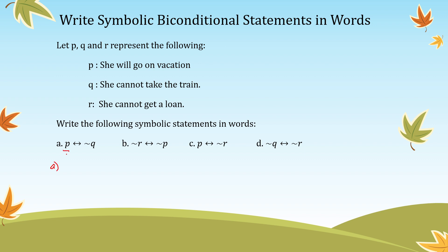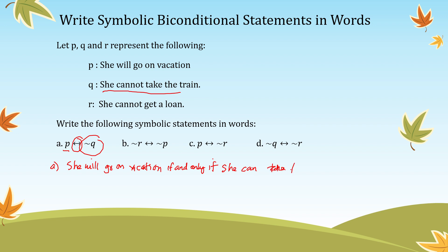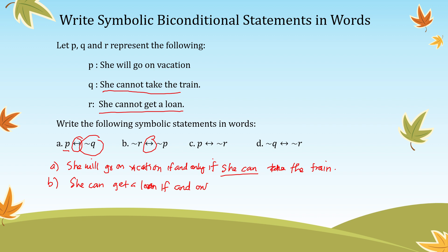For letter A: P is 'she will go on vacation,' if and only if the negation of Q. The negation of Q means 'she can take the train,' so we write 'she cannot' becomes 'she can.' For letter B: the negation of R means 'she can get a loan,' if and only if the negation of P, meaning 'she does not go on vacation.'